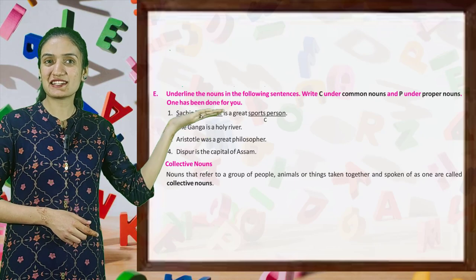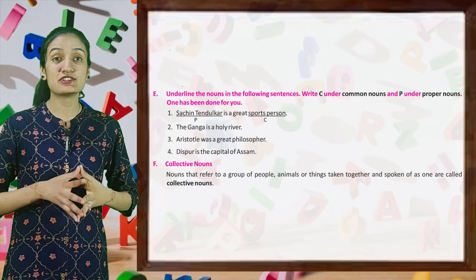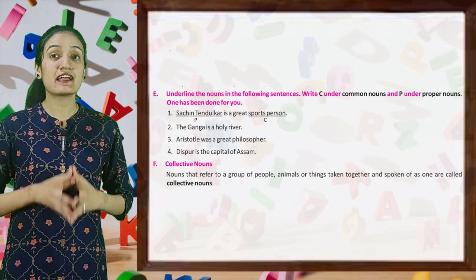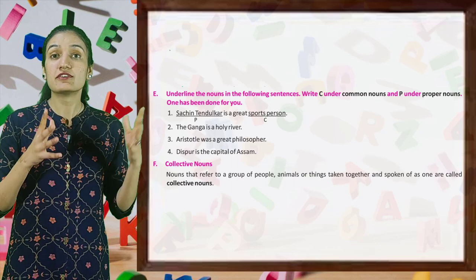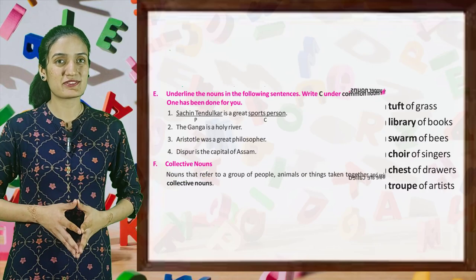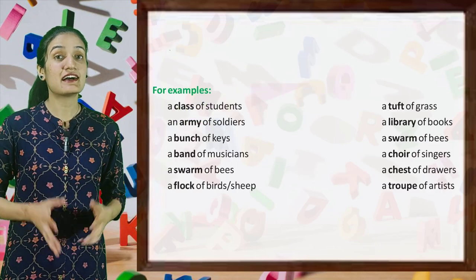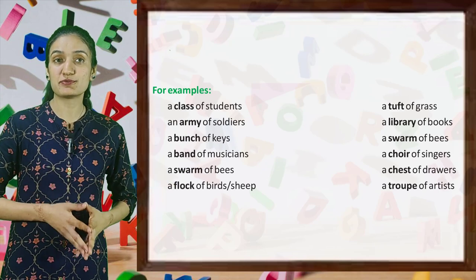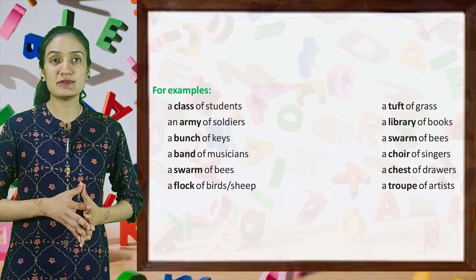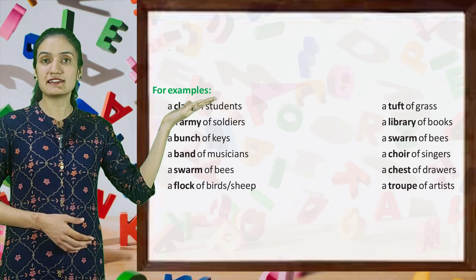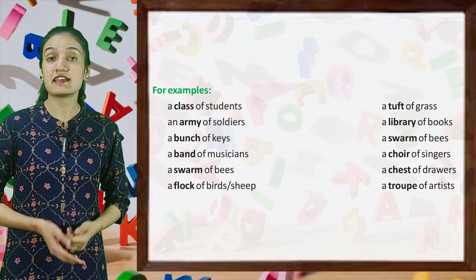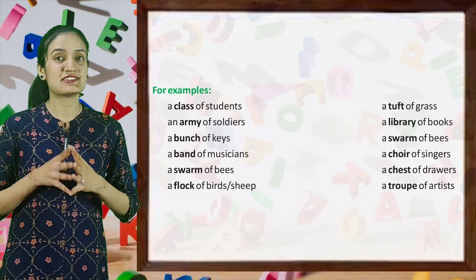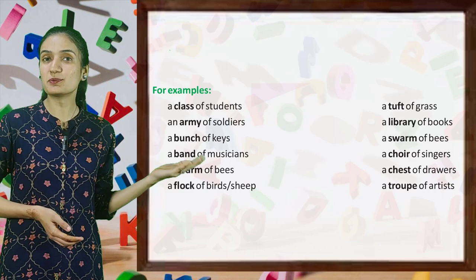Let's move on to collective nouns. Nouns that refer to a group of people, animals or things taken together and spoken of as one are called collective nouns. Here are some examples: a class of students, an army of soldiers, a bunch of keys, a band of musicians, a swarm of bees, a flock of birds and sheep. Others are: a tuft of grass, a library of books, a swarm of bees, a choir of singers, a chest of drawers, a troop of artists.